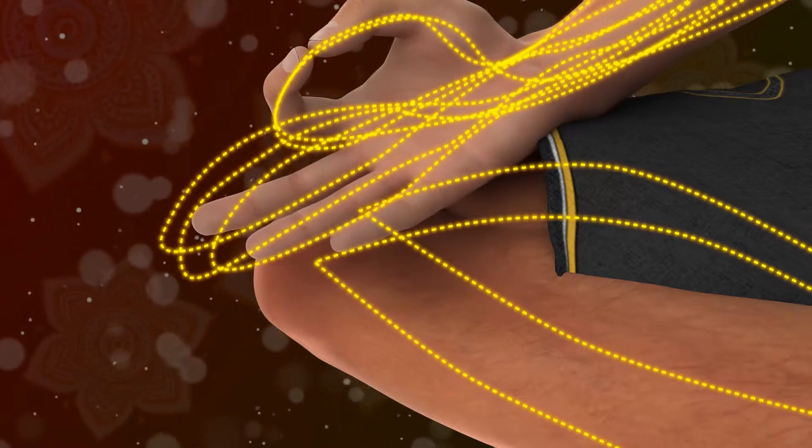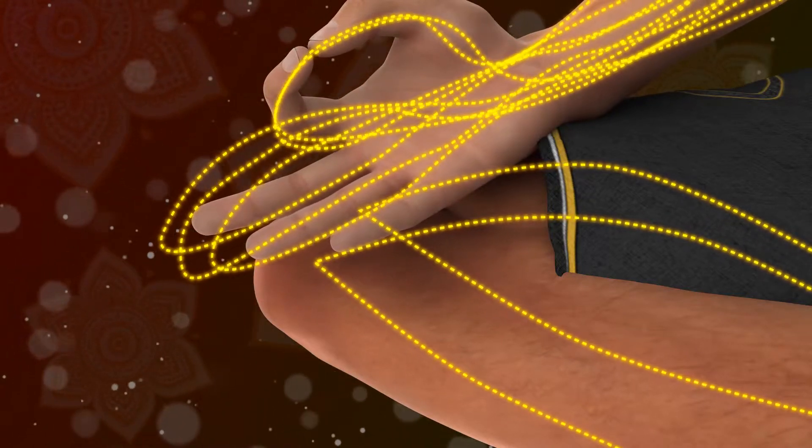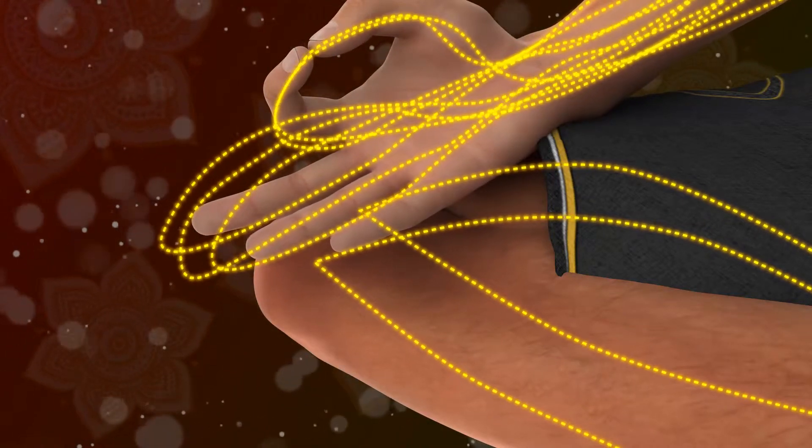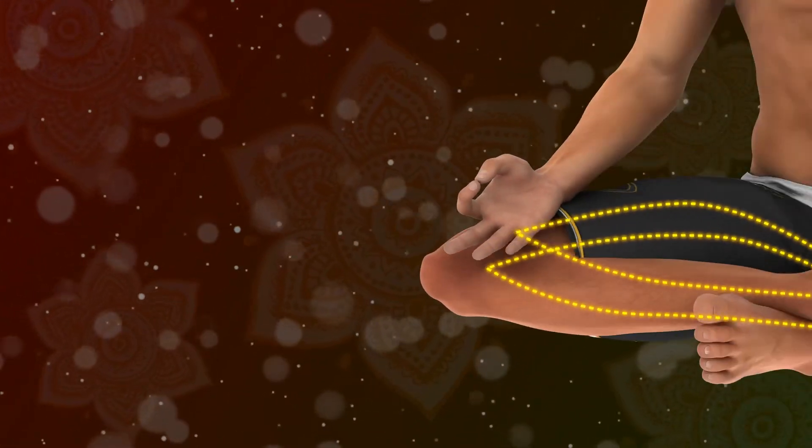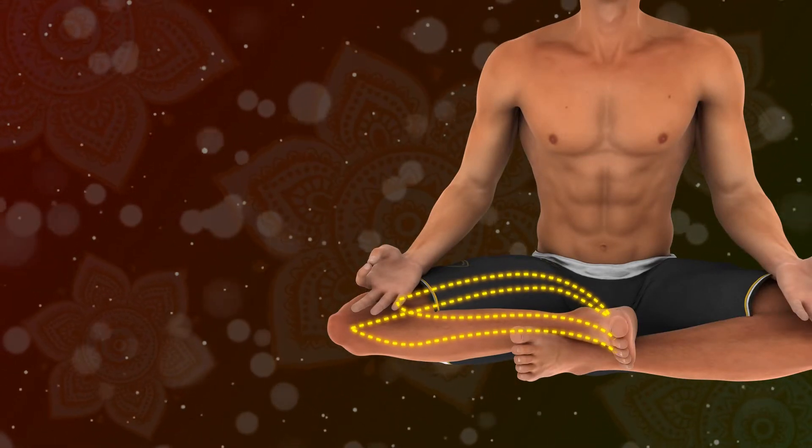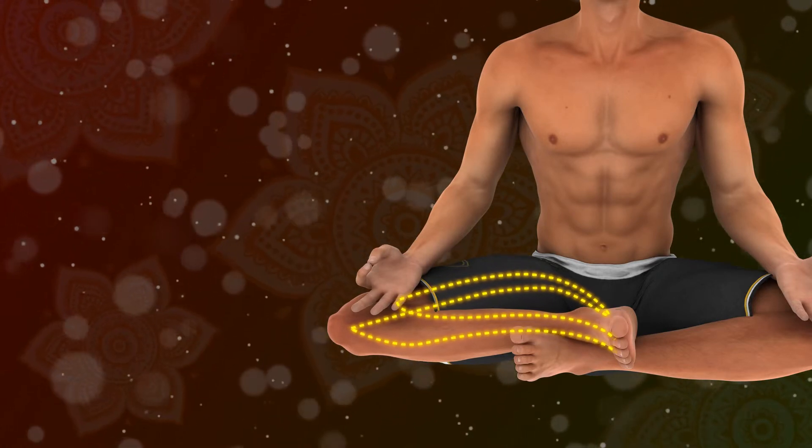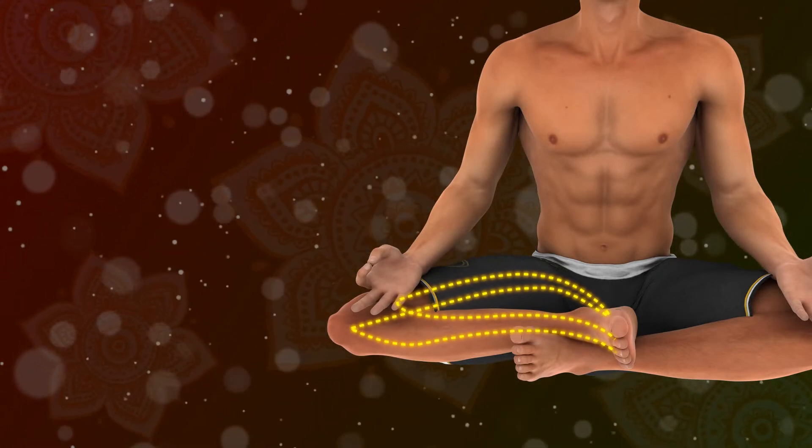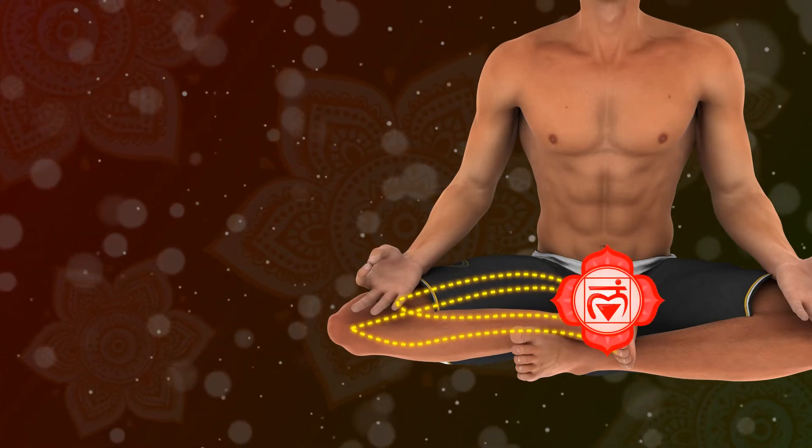In addition, placing the hands on the knees stimulates a nadi which runs from the knees up the inside of the thighs and into the perineum. This nadi is known as Gupta or the hidden nadi. Sensitizing this channel helps stimulate the energies at Muladhara Chakra.